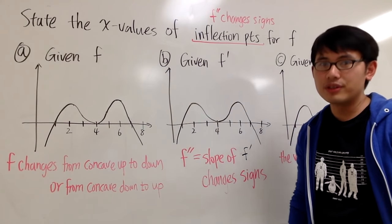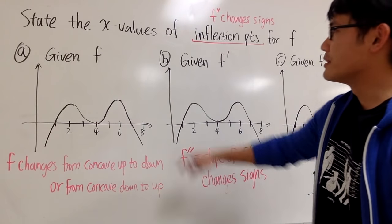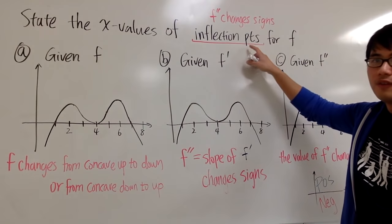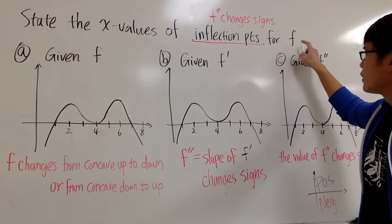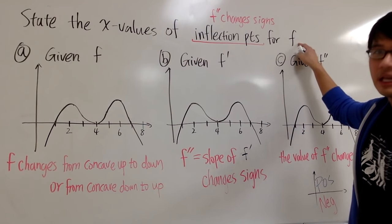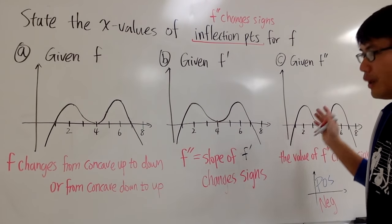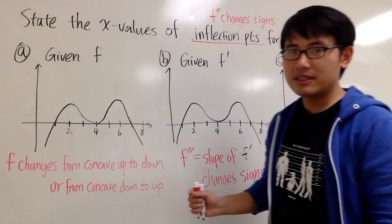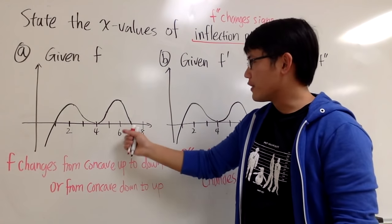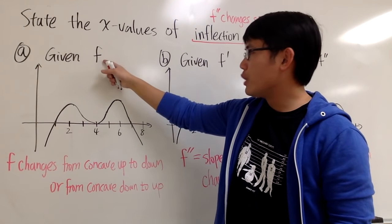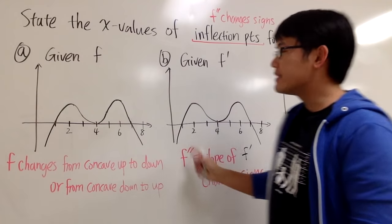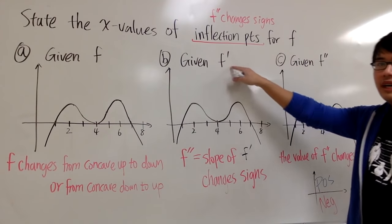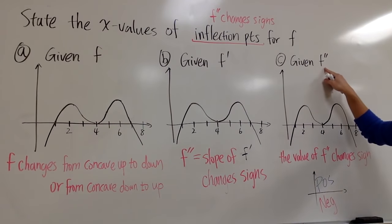Let's take a look at this question. We are going to state the x-values of inflection points for the original function f. We are given three graphs. They all look the same, however they represent different things. The first one is the original function f, the second one is the first derivative, and the third one is the second derivative.